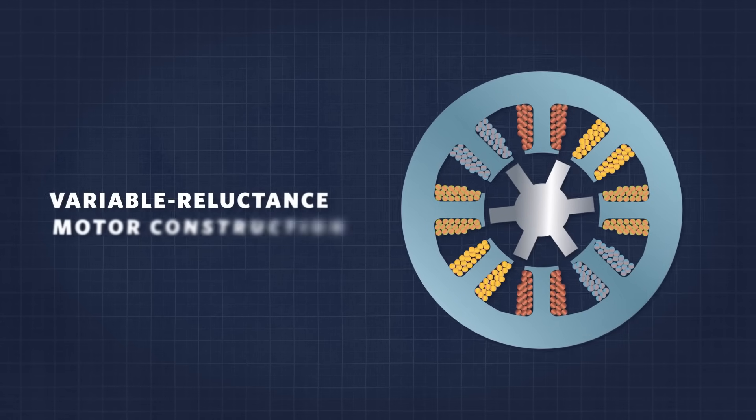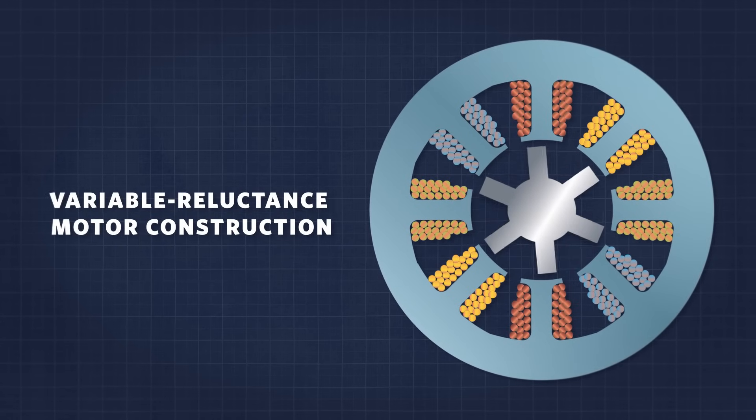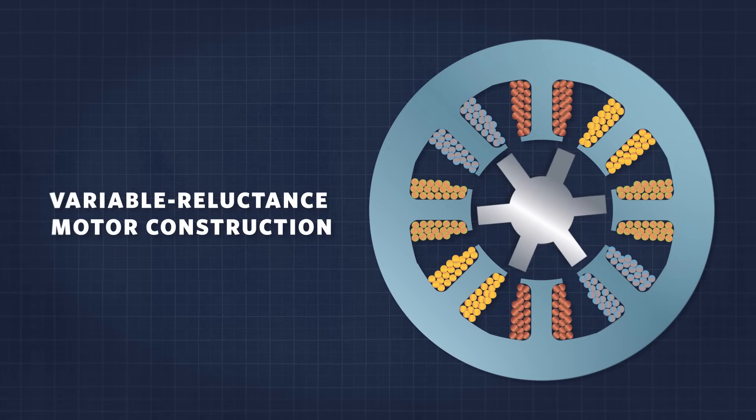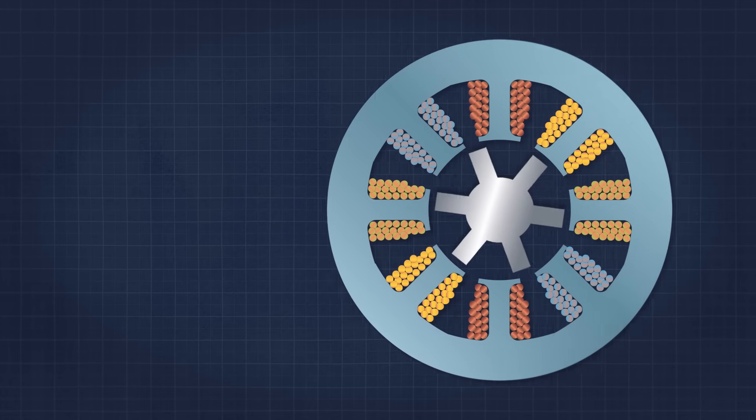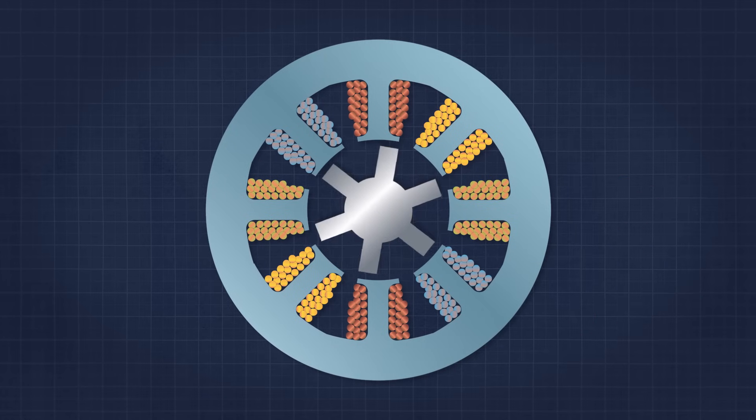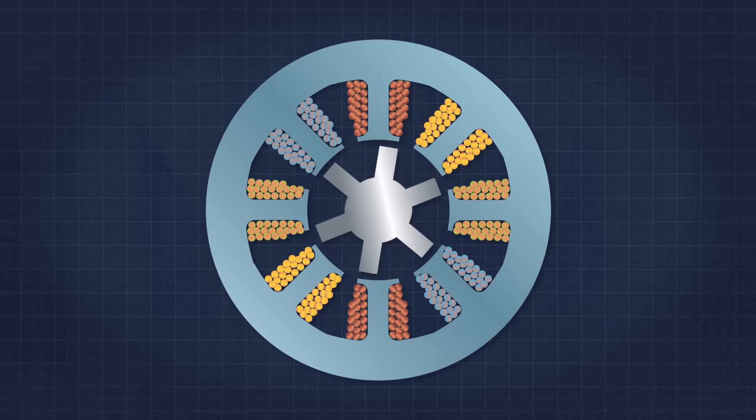Traditional variable reluctance steppers have many stator electromagnets arranged around a central gear-shaped iron rotor. When any individual electromagnet is energized, the geared iron tooth closest to that electromagnet will be drawn into alignment. When the next electromagnet is turned on and the preceding one turned off, the gear moves slightly to realign, and so on.